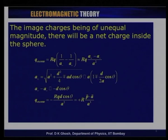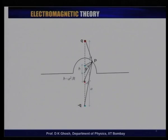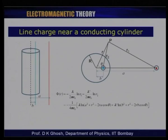The method of images, which we have been talking about, is applicable — as we have seen — to the case of plane conductors, and in the last lecture we saw how it is adapted to the case of spherical conductors. In today's lecture we would like to use the same approach and take two different types of examples, one connected with the cylindrical geometry.